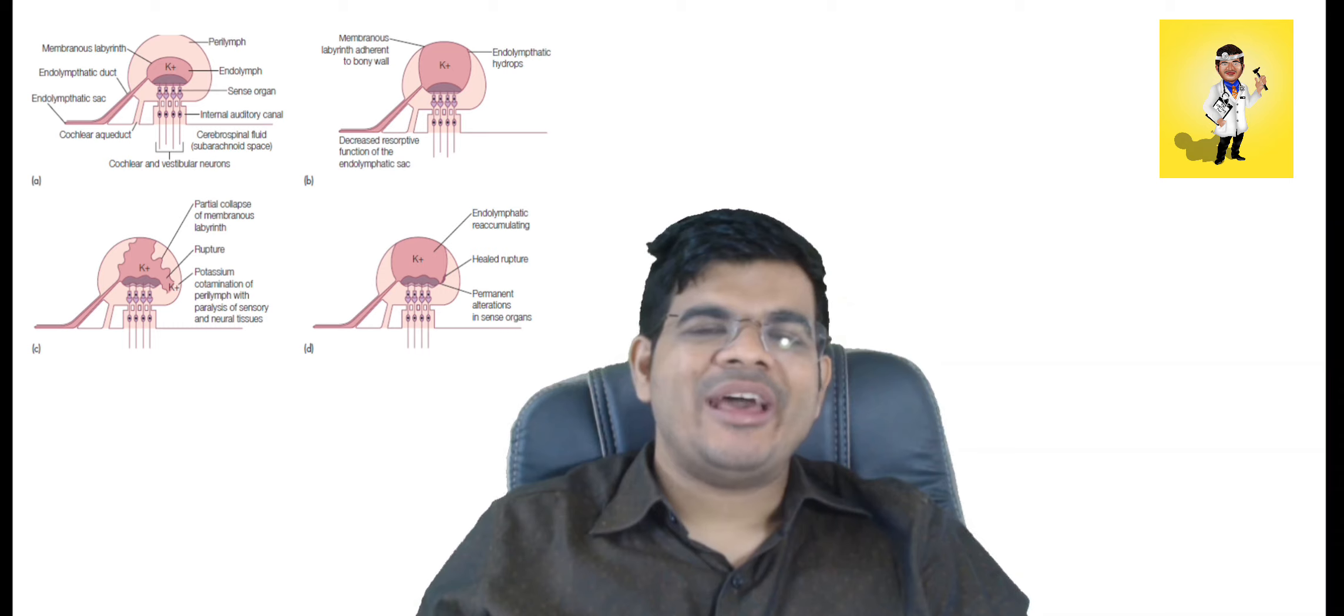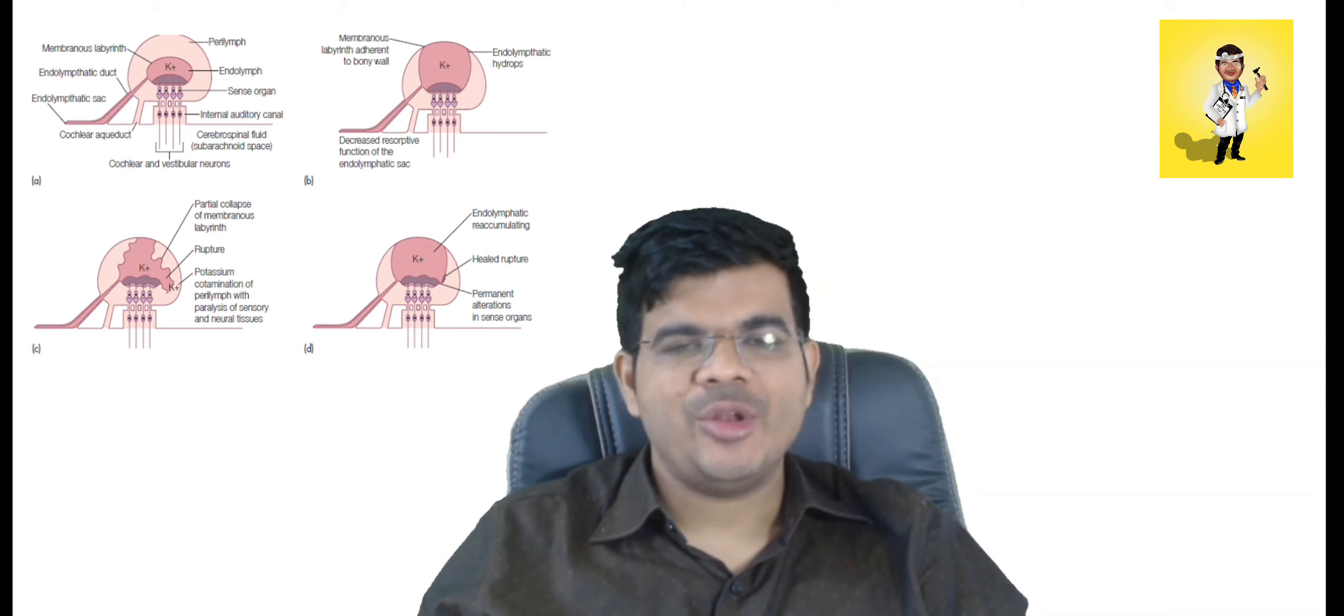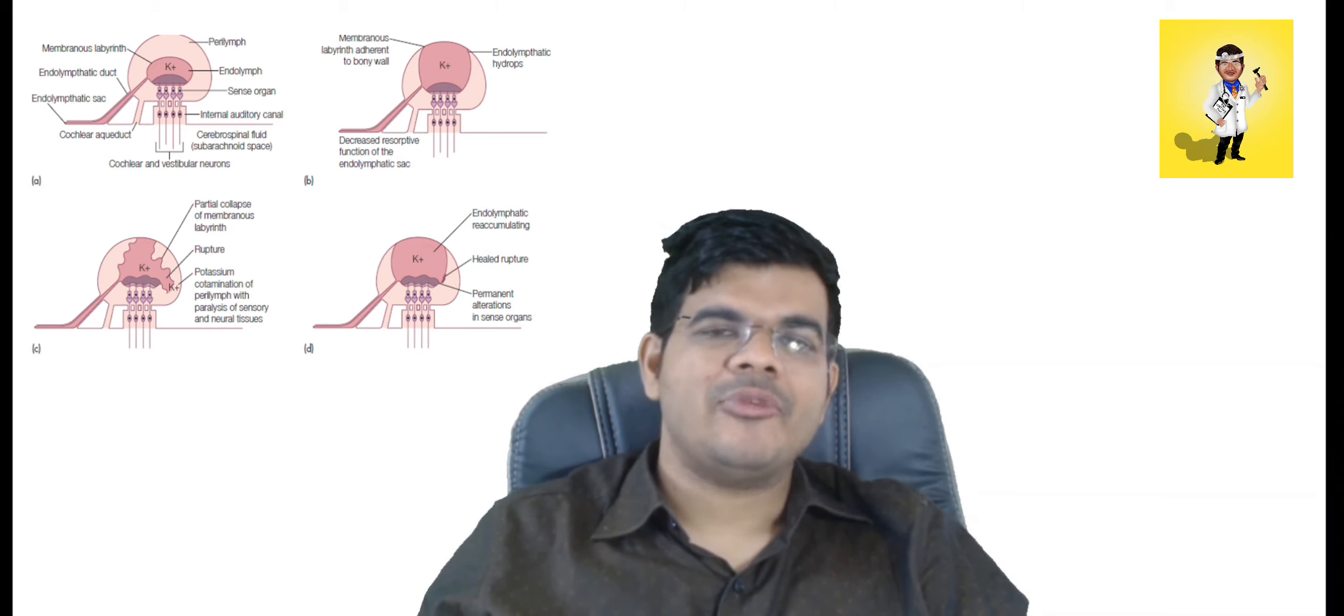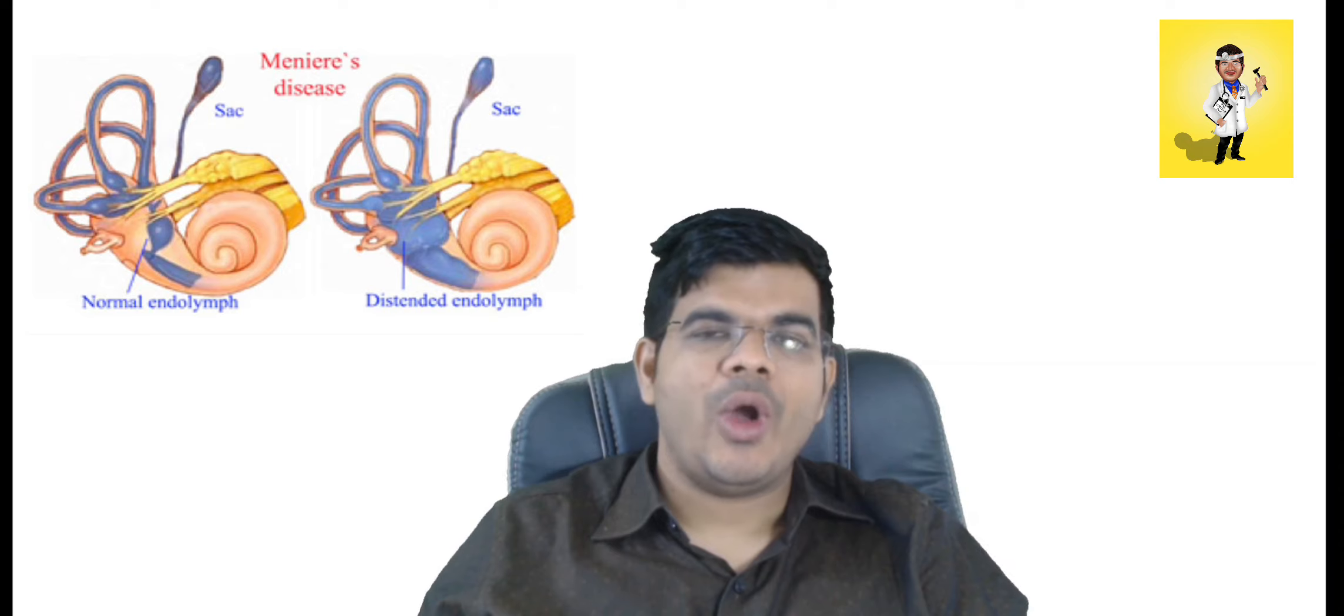What is happening in Meniere's disease? When the endolymphatic system is getting distended with endolymph, later on it ruptures and because of that there is mixing of endolymph with the perilymph. And because of the ionic disturbance that occurs, it results in hearing loss, vertigo and tinnitus.